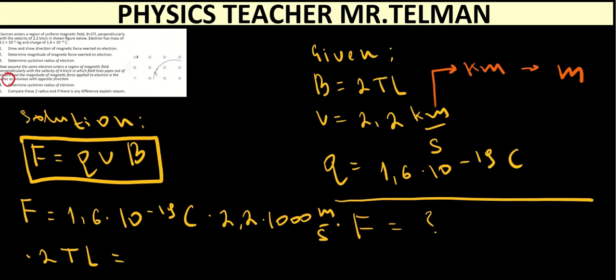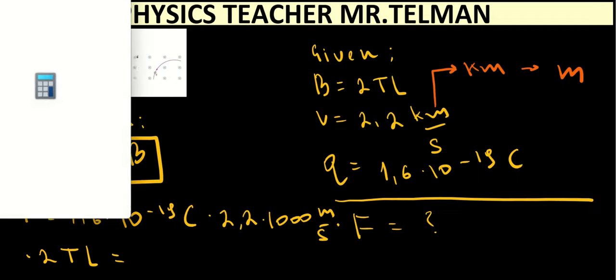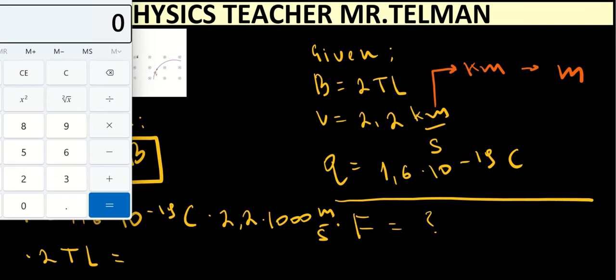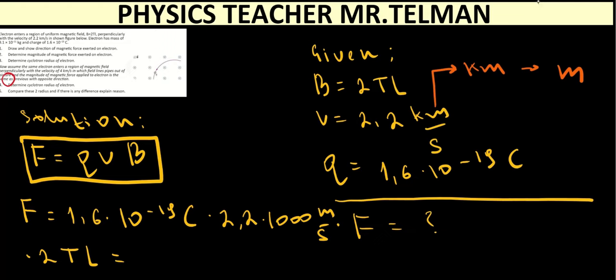And it's all will be equal to. Let's calculate it. So, the calculator is here. 1.6 multiplied by 2.2 multiplied by 2. Equal to 704 multiplied by 10 to the power of minus 19. And it's the 10 to the power of 3. How much it will be? Minus 16.